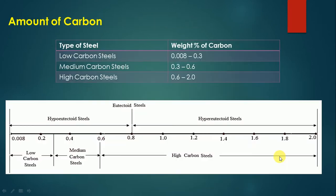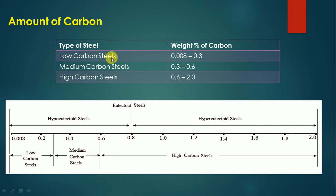The first and foremost criterion is the amount of carbon. Plain carbon steels are categorized into three subtypes: low carbon steel (0.008% to 0.3% carbon), medium carbon steel (0.3% to 0.6% carbon), and high carbon steel (0.6% to 2% carbon).